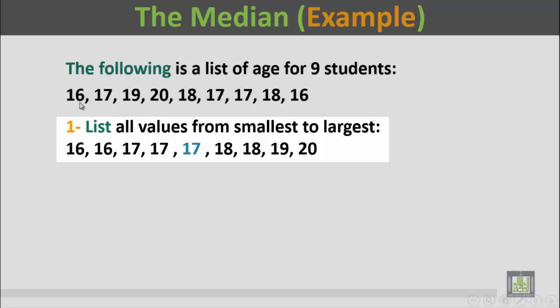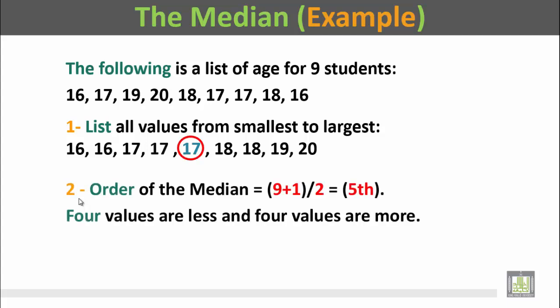The smallest was 16 and the largest was 20. So the listing of the values from smallest to largest will be 16, 16, 17, 17, 17, 18, 18, 19, and 20.